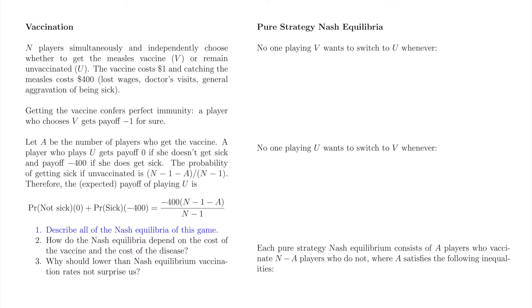A pure strategy Nash equilibrium consists of A players who vaccinate and the remaining N-A players who do not. We need to check that a player choosing V cannot profitably deviate to U, and also that a player choosing U cannot profitably deviate to V. We'll obtain upper and lower bounds on the Nash equilibrium A in terms of the number of players N, the cost of the vaccine, 1, and the cost of the measles, 400.